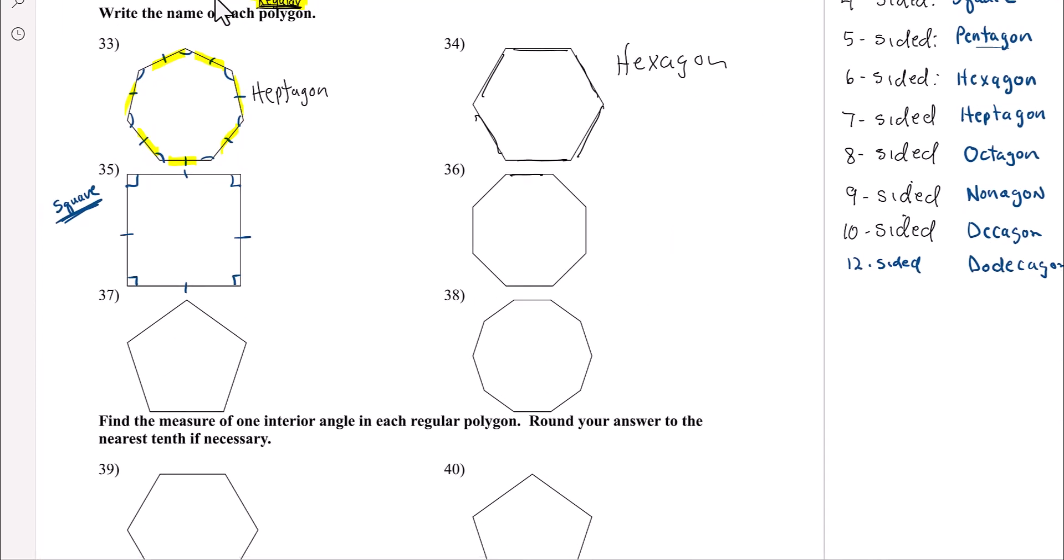This looks like a stop sign. One, two, three, four, five, six, seven, eight. Yes, normally, this would be a red sign. It would say stop in the middle. This is an octagon.